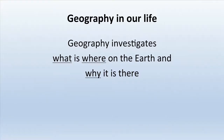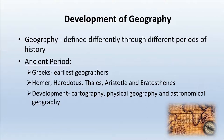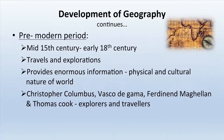Geography has been defined differently in different periods of history. During ancient times, the earliest geographers were Greeks, including Homer, Herodotus, Thales, Aristotle, and Eratosthenes. Development during this time was mainly in the fields of cartography, physical geography, and astronomical geography. The pre-modern period extended from the mid-15th century BC to the early 18th century.